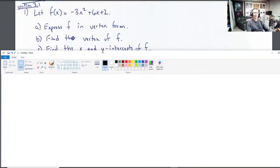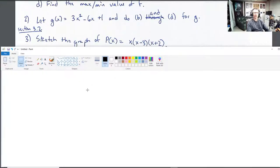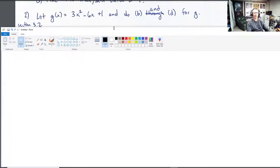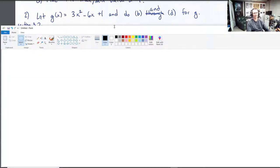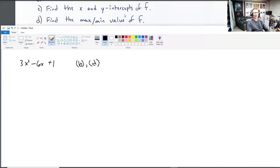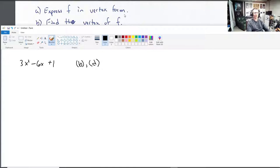The next question is: let g(x) equal 3x squared minus 6x plus 1, and we're going to do parts b and d. When I chose this question, I was cautious. I did not want to give you something that was too difficult. So we want to do parts b and part d from above. What was part b? Find the vertex. And what was d? Find the max min value.